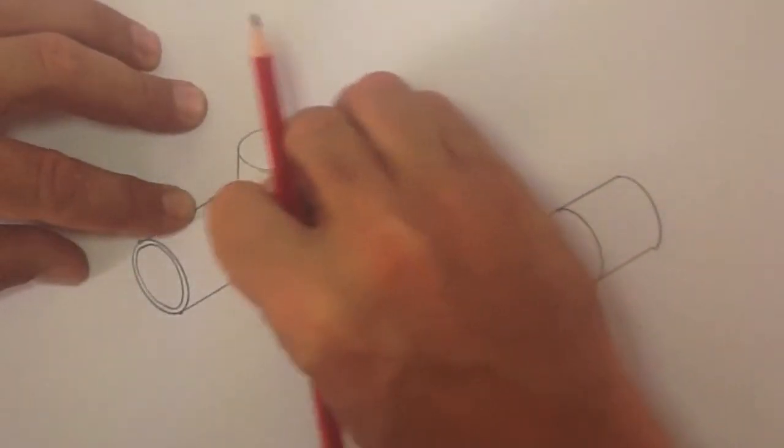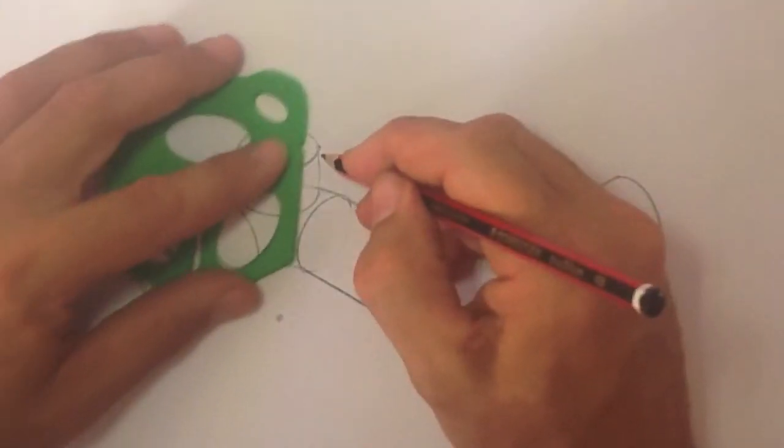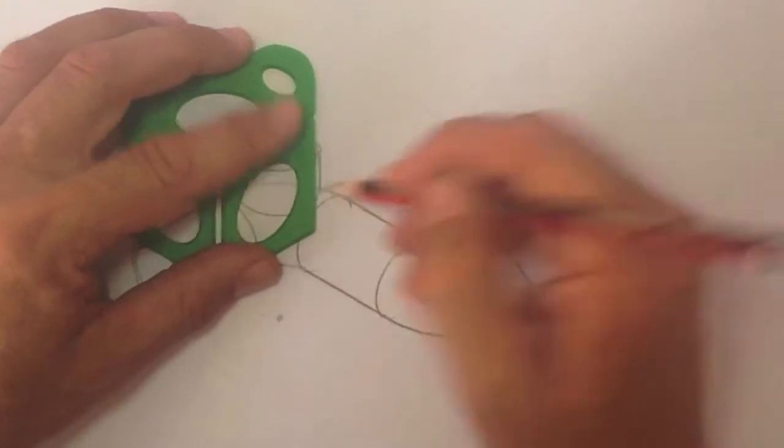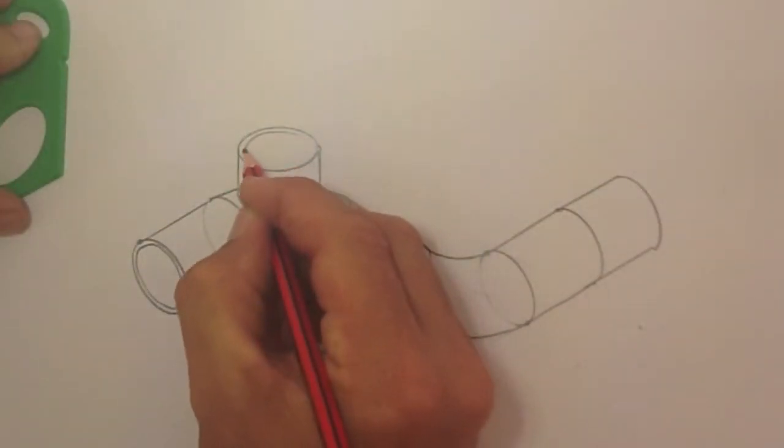Let's erase the line that's hidden. Neaten this one up. Let's make it look hollow by tracing a line around the inside.